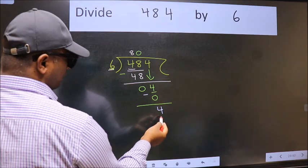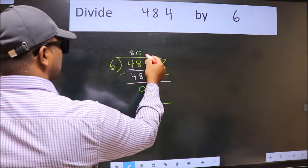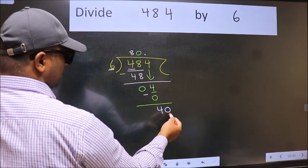And 4 is smaller than 6. So now we can put dot and take 0. So 40.